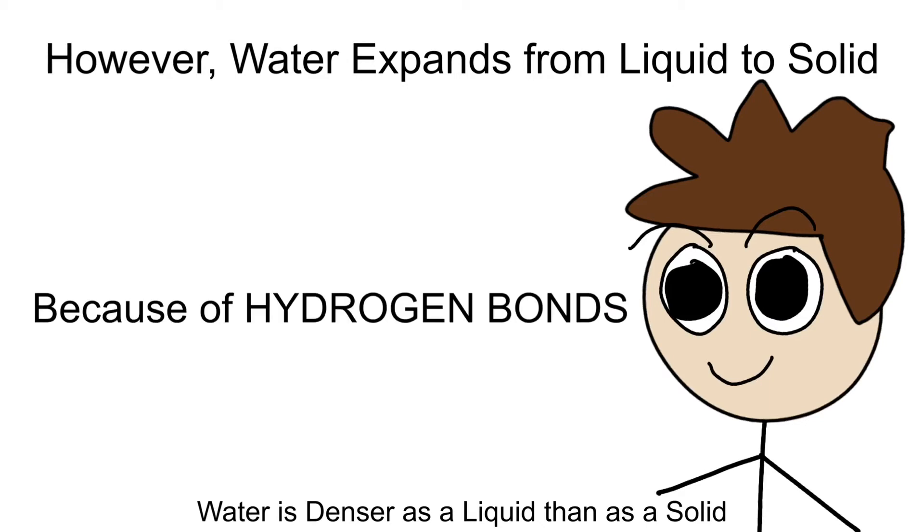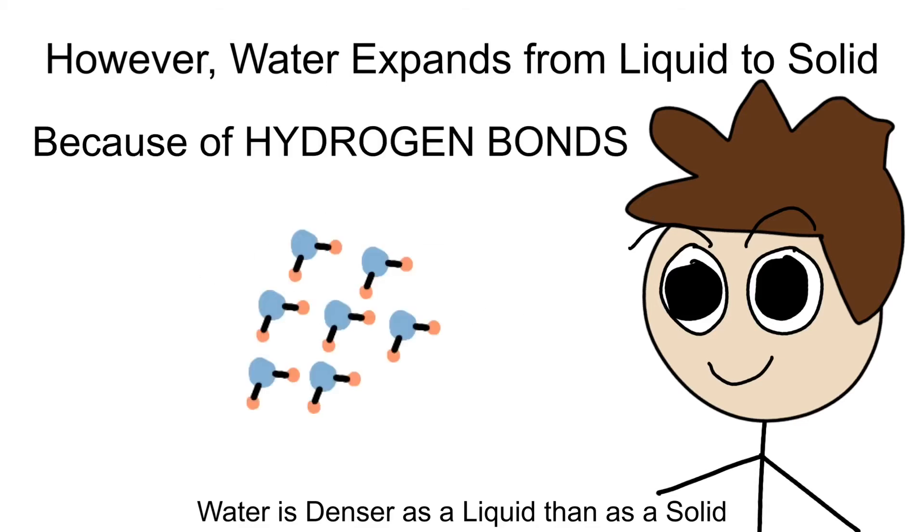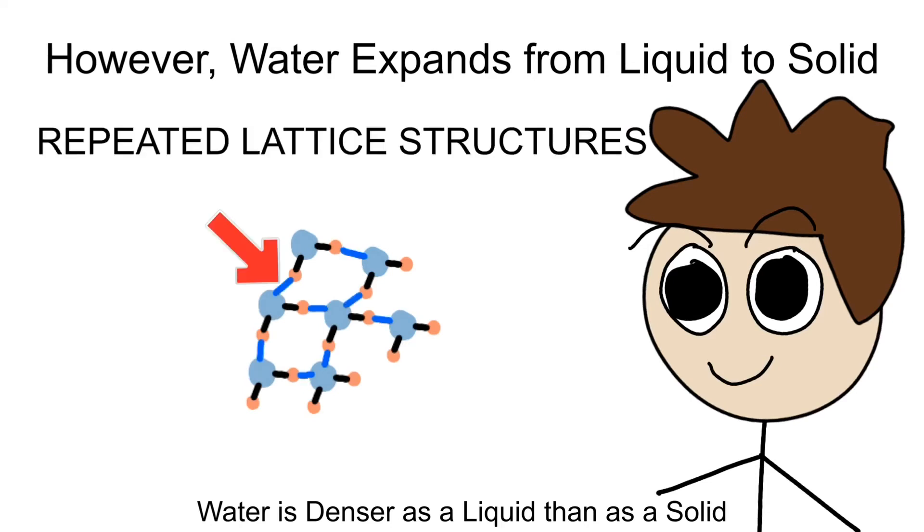Here goes the explanation. So as water turns to ice, its hydrogen bonds from water to water begin to crystallize, forming these repeated lattice structures. Lattice is defined as a structure consisting of strips of wood or metals crossed and fastened together with squares or diamond-shaped spaces left in between. In this case, we're talking about the fastening of these hydrogen bonds spreading out to form a lattice with spaces left in between.